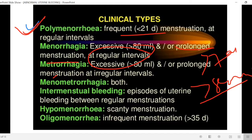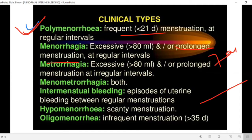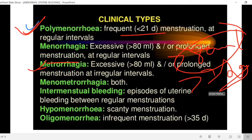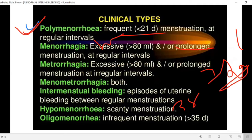In menorrhagia, the cycle is regular — for example, 28 days each cycle — but there is excessive blood loss of more than 80 ml or duration more than 7 days. In metrorrhagia, however, bleeding occurs at irregular intervals: for instance, 28 days, then 31 days, then 35 days — these irregular intervals characterize metrorrhagia.